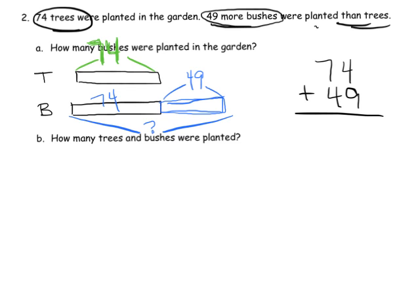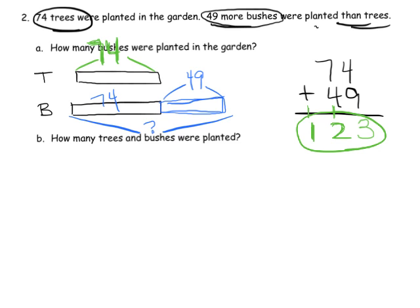Let's solve 74 plus 49. Adding the 1s: 9 plus 4 is 13, so we bundle a 10 into the 10s column and have 3 left over. Now adding the 10s: 7 plus 4 plus 1 is 12, so we bundle 10 into the 100s column, leaving 2 in the 10s column and 1 in the 100s column. Our answer is 123 — so there are 123 bushes.